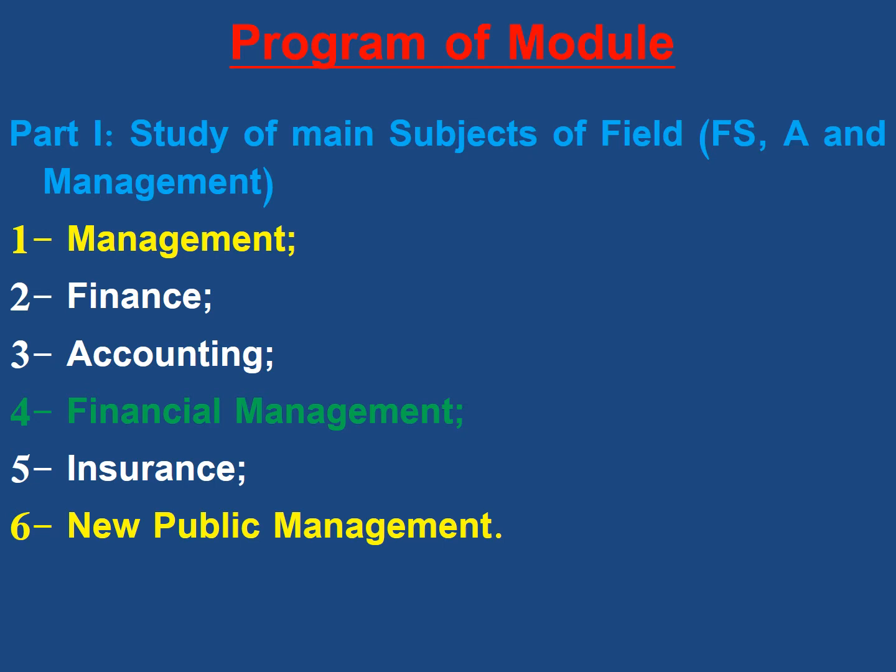Students of the specialty of accounting and finance — the fourth subject was financial management. Here I choose three colors: yellow means the subject is for management sciences; white means it is selected for financial sciences and accounting. Management is the first subject for management sciences, while finance and accounting are for financial sciences and accounting. Financial management in green is different because it is common between the two specialties — management sciences, and financial sciences and accounting.